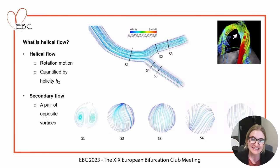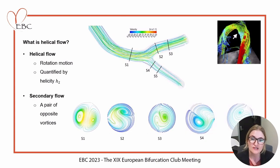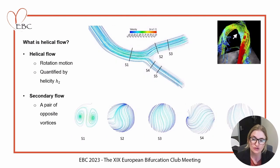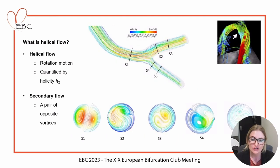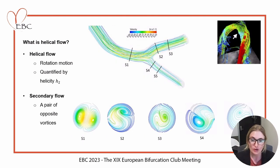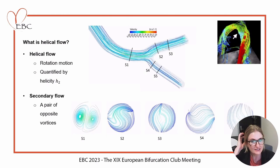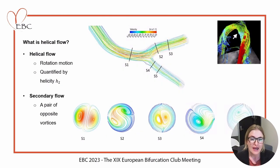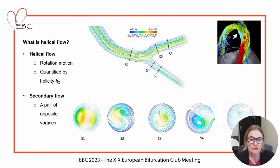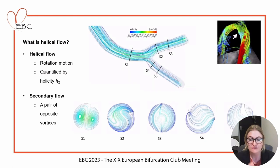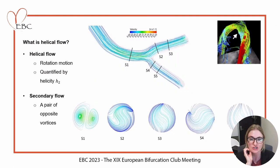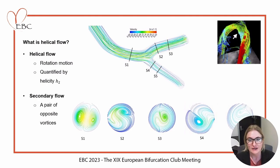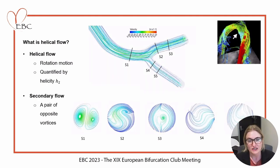This then induces what we call secondary flow. Those cross-sections marked across the coronary bifurcation — you can see in the bottom row — introduce a pair of opposing vortices with different rotational orientation according to the patient-specific anatomy.